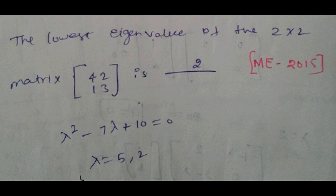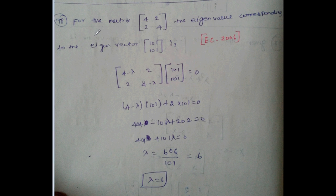For the matrix [4, 2; 2, 4], eigenvalue corresponding to the eigenvector is. This problem is 2006. [4 minus lambda, 2; 2, 4 minus lambda] times [1, 0; 1, 0] times [1, 0] equal to 0. This row, this column, multiply.